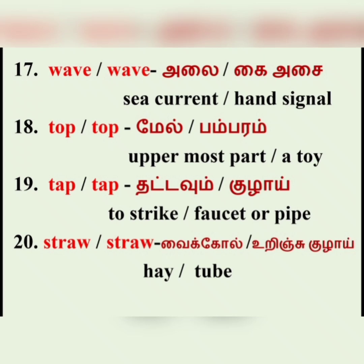Next, 'tap.' Tapping means to strike someone lightly, like tapping the table. The other meaning is a water pipe or faucet. And the last one is 'straw' — one straw is dried grass that we use for feeding cattle. The other straw is the tube made out of paper or plastic that we use to suck water or juice.